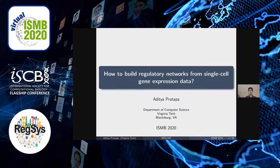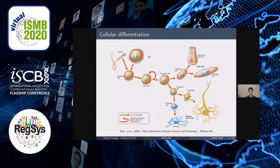Hi, I'm Aditya Patapa from Virginia Tech. My talk today is titled 'How to Build Regulatory Networks from Single Cell Gene Expression Data.' One of the fundamental questions in biology is how the many different cell types in the body are generated during embryonic development from a fertilized egg. The embryonic stem cell undergoes a series of cell divisions and gives rise to different cell types such as neurons and skin cells. This process, in which a cell changes from one type to another, is known as cellular differentiation.